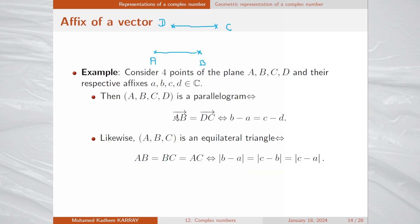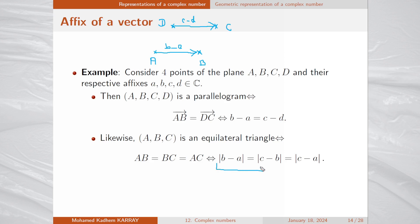Here is an application using affixes of vectors. Consider four points A, B, C, D with respective affixes in lowercase. Then ABCD is a parallelogram if and only if vector AB equals vector DC, which is equivalent to b minus a equals c minus d. In the same way, triangle ABC is equilateral if and only if |b - a| = |c - b| = |c - a|.